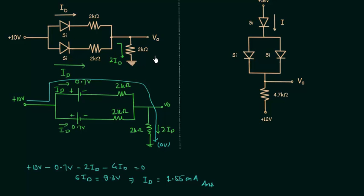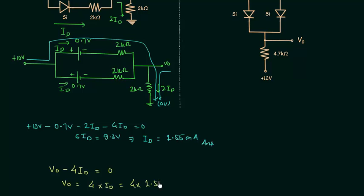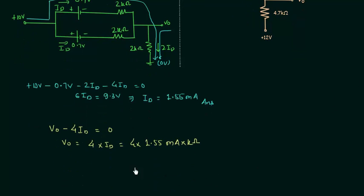Now we will find out V0, the voltage across this resistance. Starting from V0 and moving towards 0V: V0 minus 4ID equals 0, so V0 is simply 4 times ID. With ID equal to 1.55mA and 4 kilo ohms resistance, V0 is equal to 6.2V.